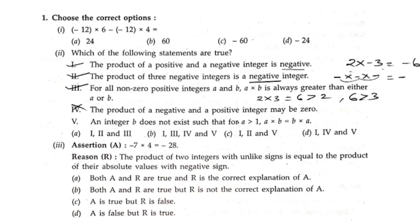The fifth statement says no integer b exists such that 4 times b is greater than 1. But if we take any number greater than 1, suppose 2, and put it in place of a, then 2 into b equals 2b, so b is existing — b is there. So this is also a wrong statement.